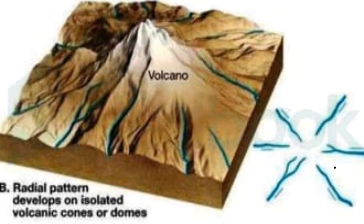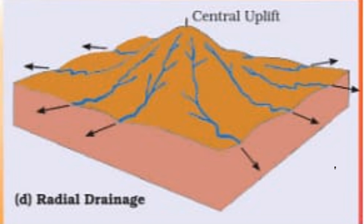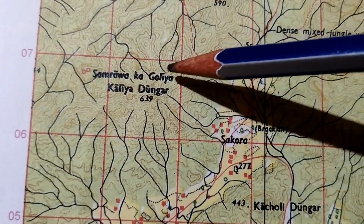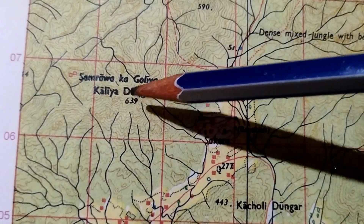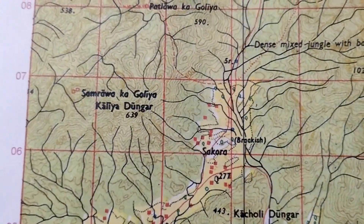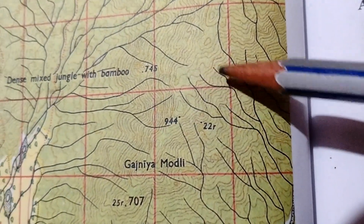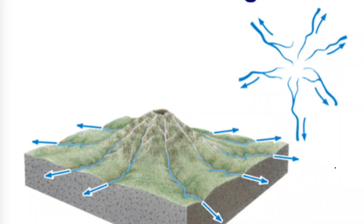In the radial pattern, streams flow outward in all directions from a conical hill, watershed, or ridge. If rivers flow outward from a peak, hill, or mountain in all directions, it is the best example of a radial pattern.